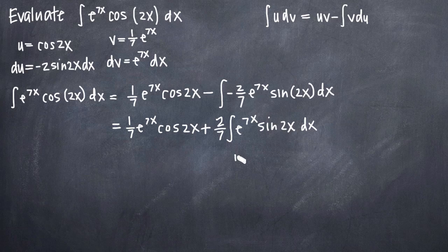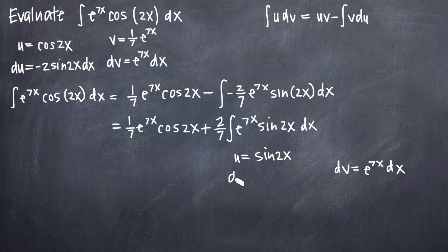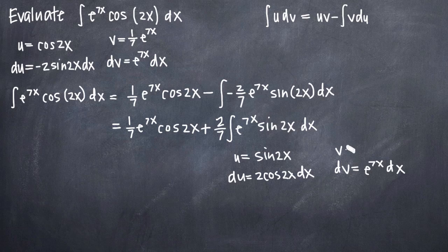For the second application, we'll say u equals sine of 2x, and therefore dv equals e to the 7x dx. Taking the derivative of u: the derivative of sine is cosine, and by chain rule we multiply by the derivative of the inside function 2x, giving du equals 2 cosine of 2x dx. Taking the integral of dv, we've already done this — v equals 1/7 e to the 7x.